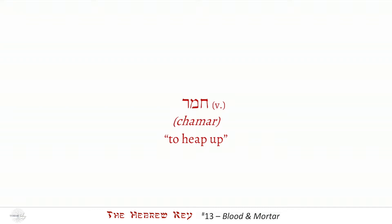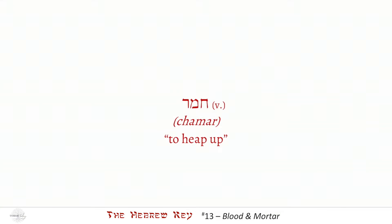Most Hebrew words or Hebrew verbs can also be used as nouns, as we're going to see in just a moment. Even the word 'heap' in English can be a verb — I am heaping up something — and then after I'm done, I have a noun: a heap of something. So 'to heap' is a verb, and 'a heap' is a noun. This word works much the same way.